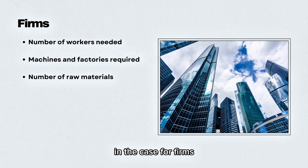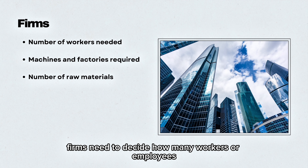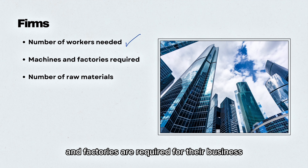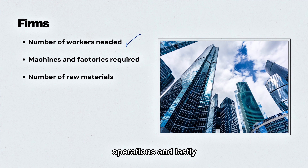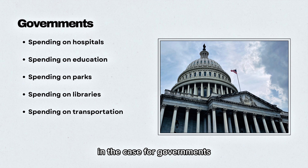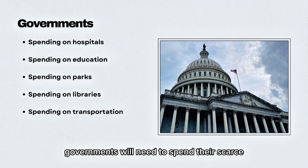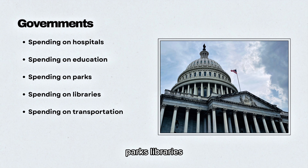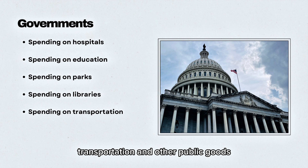In the case for firms, they need to decide how many workers or employees are required, how many machines and factories are required for their business operations, and how many raw materials are required. In the case for governments, they will need to spend their scarce resources on hospitals, education, parks, libraries, transportation, and other public goods.